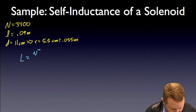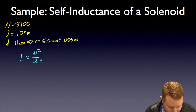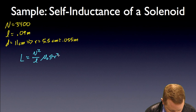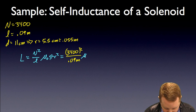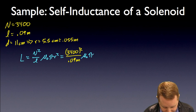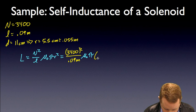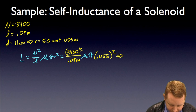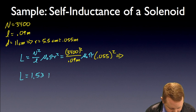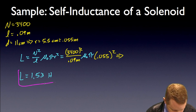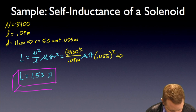Now I can calculate the self-inductance of that solenoid. L, we just determined, is N squared over its length L, mu naught pi r squared, which is going to be 3,400 windings squared, divided by .09 meters, times our constant mu naught, times pi, times our radius .055 meters squared. When I put that all into my calculator, I come up with a self-inductance of about 1.53 Henrys. That's a pretty big self-inductance.